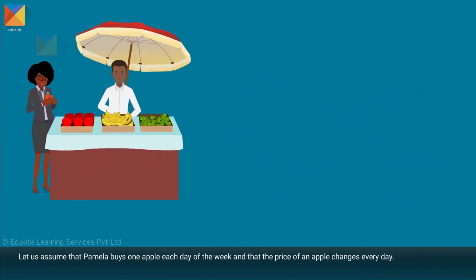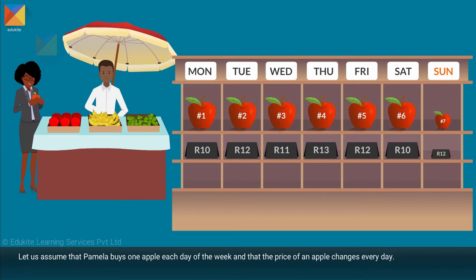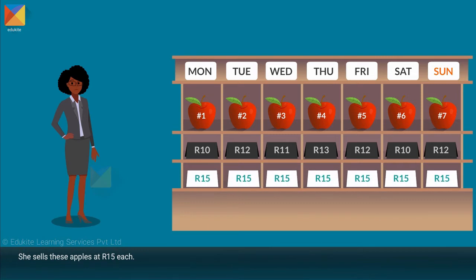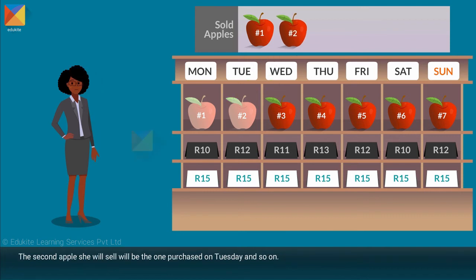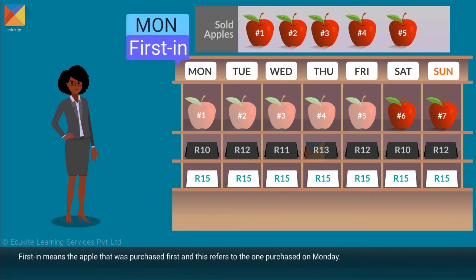Let us assume that Pamela buys one apple each day of the week and that the price of an apple changes every day. She sells these apples at 15 rand each. Under the FIFO method, the first apple Pamela will sell will be the oldest apple, purchased on Monday. The second apple she will sell will be the one purchased on Tuesday, and so on. First In means the apple that was purchased first, and this refers to the one purchased on Monday.